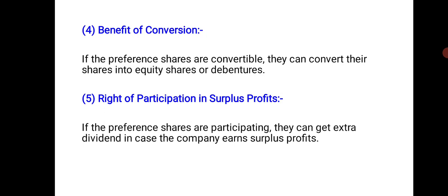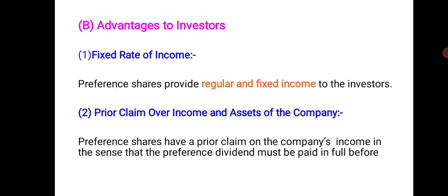Fifth, right to participate in surplus profits. If the preference shares are participating, they can get extra dividend in the case where the company earns surplus profit. After paying interest, tax, preference dividend, and equity dividend up to a fixed amount, if there is still surplus available, participating preference shareholders get a share of that surplus as well.